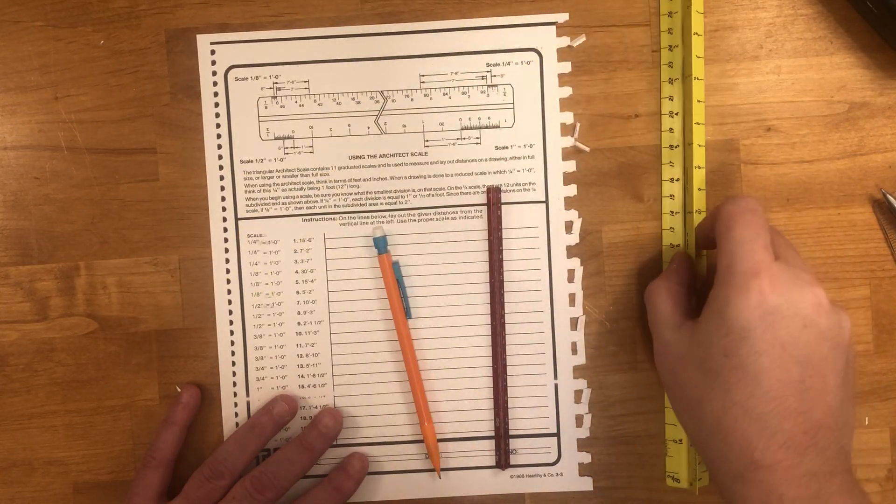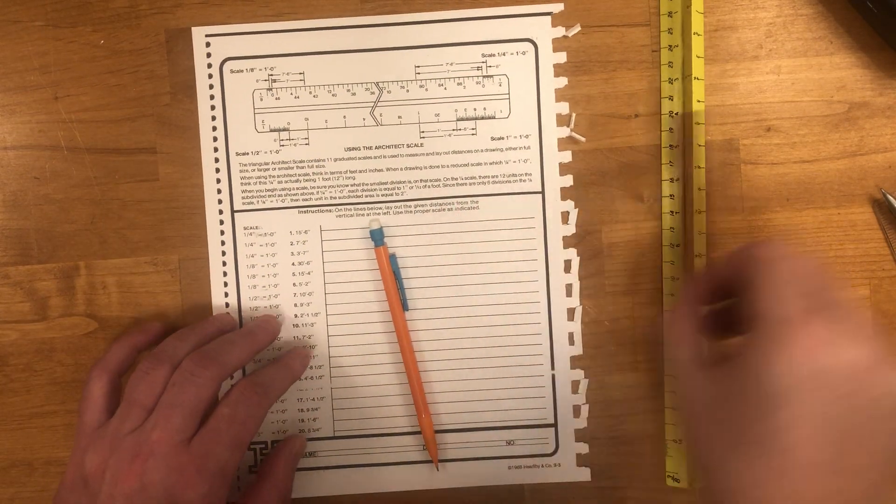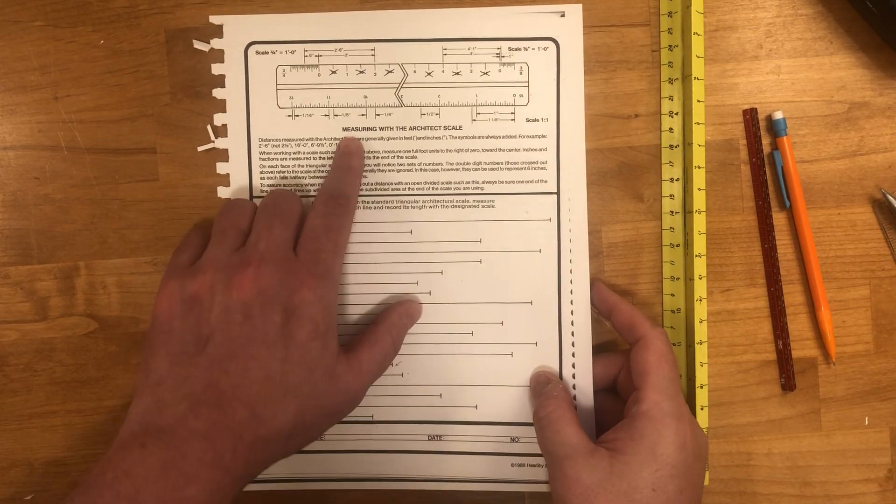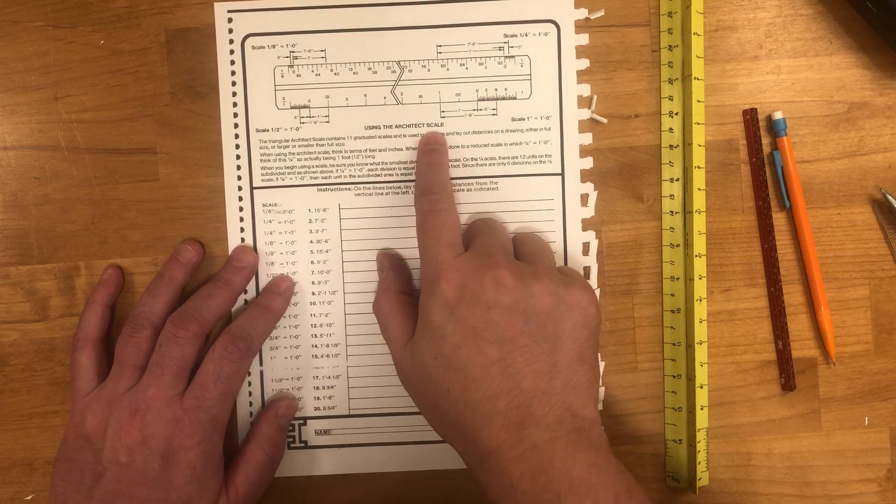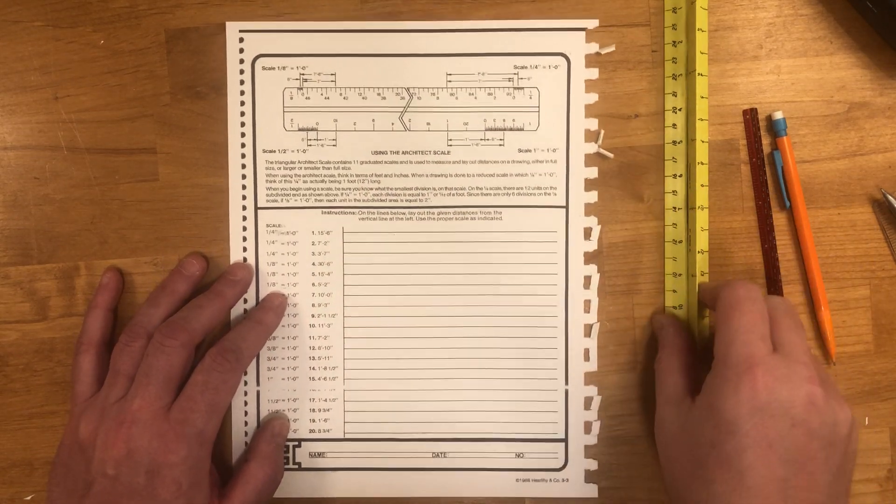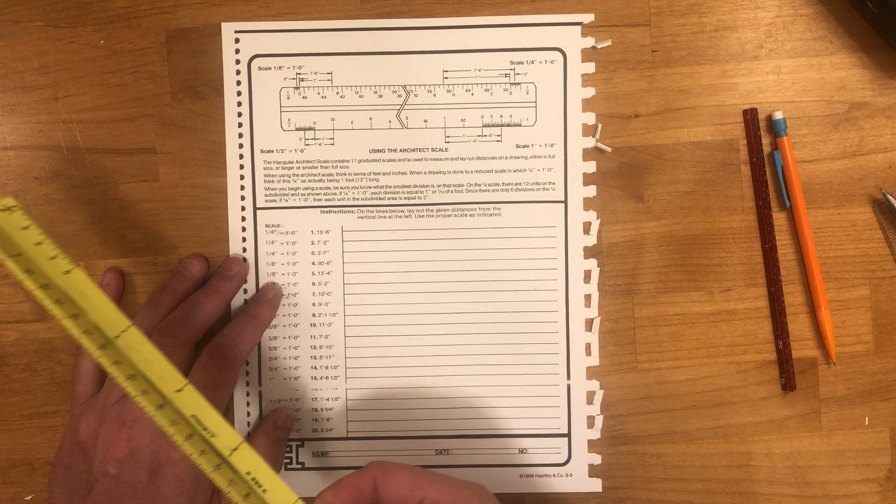Okay folks, this is video number four, the last one for this assignment. For this assignment you will be doing this sheet, measuring with the architect's scale, and this sheet using the architect's scale. So there's two parts to this thing, right? You use it both to measure and to draw.